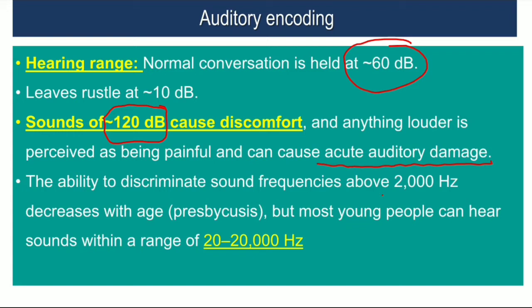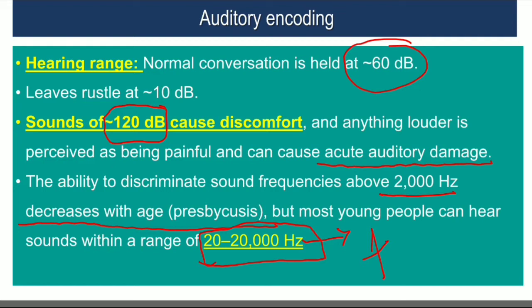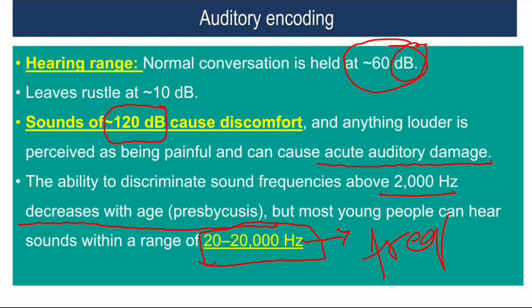The ability to discriminate sound frequency above 2000 Hz decreases with age, which is called presbycusis. In normal or young people, the sound range is 20 to 20,000 Hertz — these are the normal hearing frequencies. Hertz is the unit of frequency and decibels is the unit of loudness or amplitude.